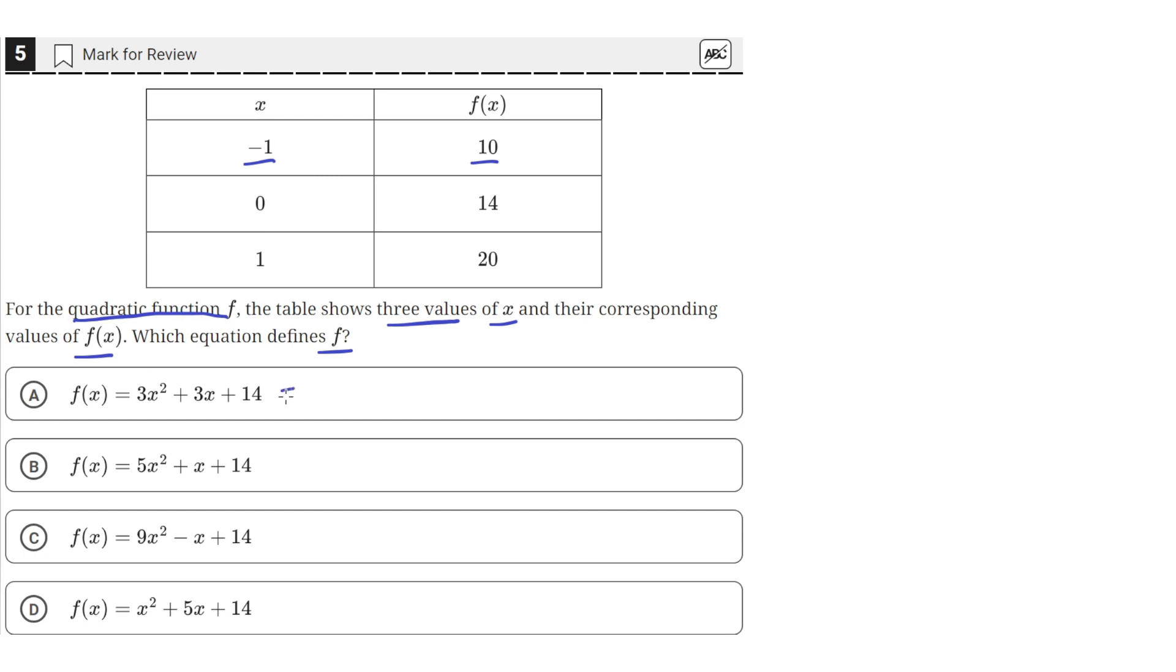Let's plug in negative 1 into the first equation. When we plug in negative 1, negative 1 squared is just 1, so we get a 3. Then 3 times negative 1 is negative 3, and then plus 14. If we simplify this, this just equals 14. So that means A is incorrect, because it doesn't give us a value of 10 at negative 1 for x.